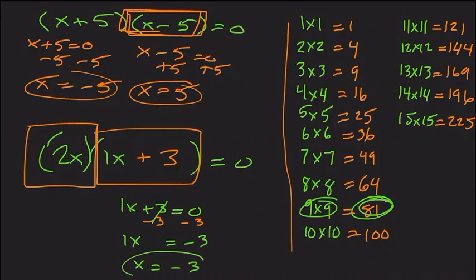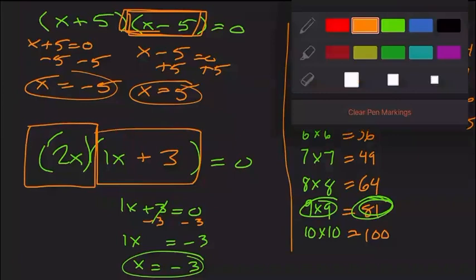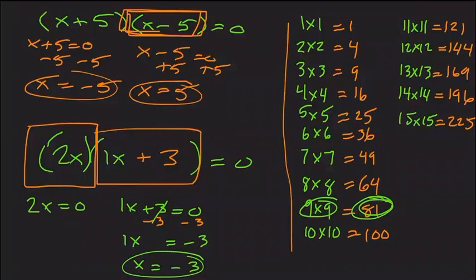For the 2x factor: 2 times something equals 0 — that something must be 0. We can verify: set 2x equals 0, divide both sides by 2, and we get x equals 0 over 2, which is 0. So our two solutions are x equals 0 and x equals negative 3.